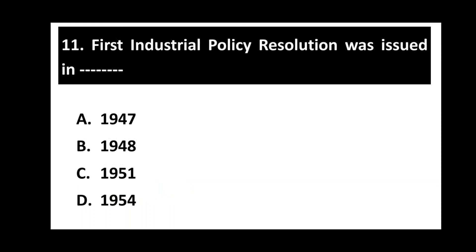Question number eleven. The first industrial policy resolution was issued in — options are: 1947, 1948, 1951, 1954. The right option is 1948. The first industrial policy resolution was issued in 1948.